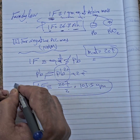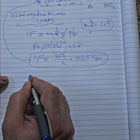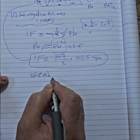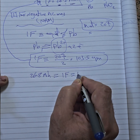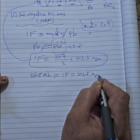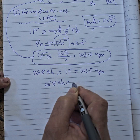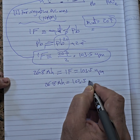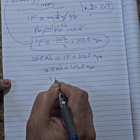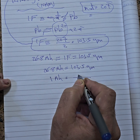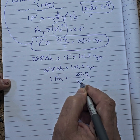We will use this equation here. So, 26.8 Ampere hour equals 1 Faraday equals 103.5 grams. Therefore, 26.8 Ampere hour is equal to 103.5 grams, which gives us 1 Ampere hour equal to 103.5 divided by 26.8 grams.